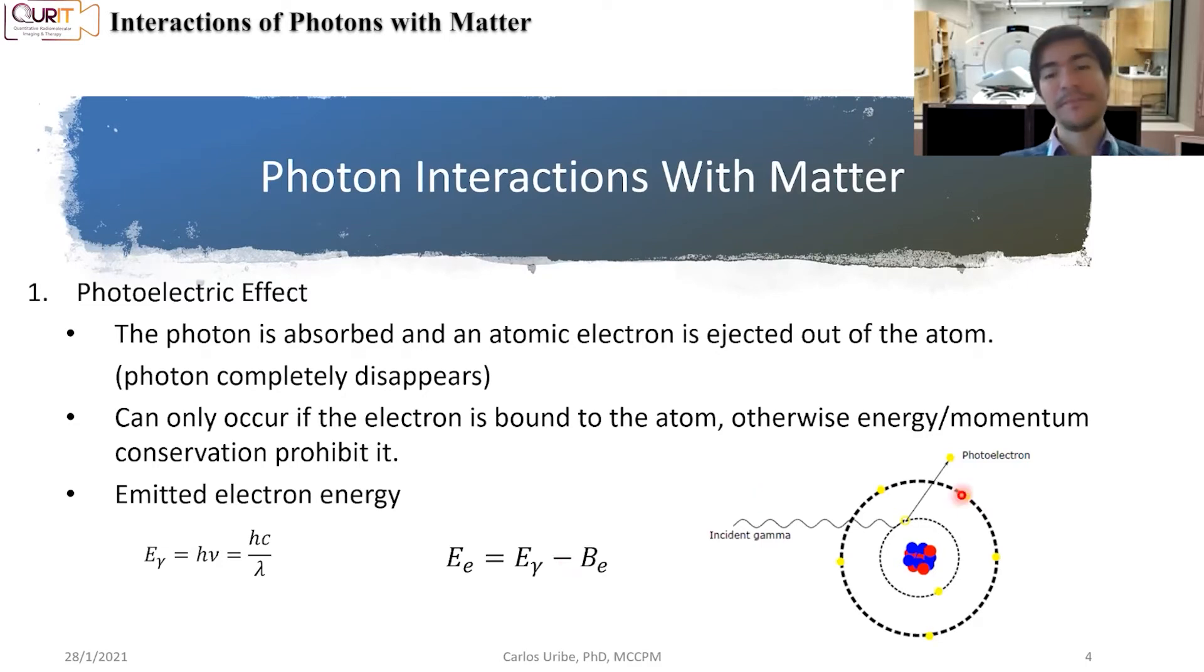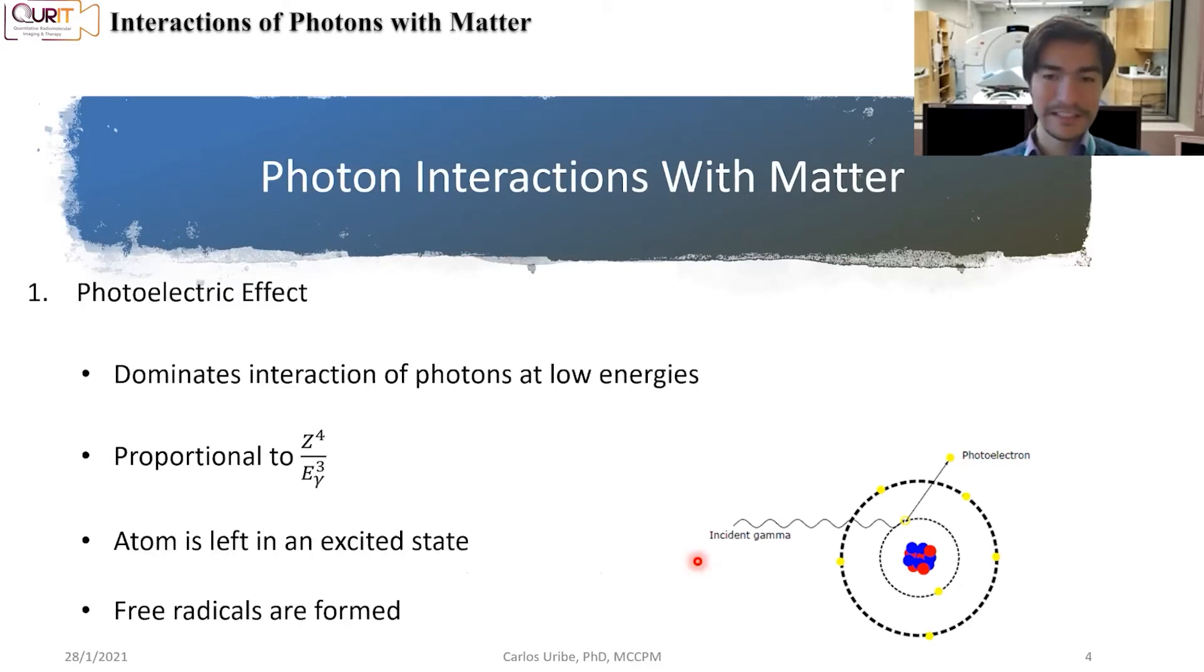Now, what is the energy that that emitting electron will have? Well, if you have an initial photon with some energy, all the energy is definitely going to be transferred. But you need to keep in mind that there's some binding energy of that electron to the atom that you need to counteract to be able to release the electron. So the energy, the kinetic energy that that electron will have is the initial energy that the photon had minus the binding energy from the shell that it got knocked out from.